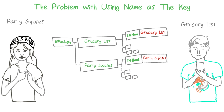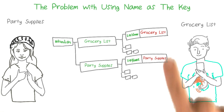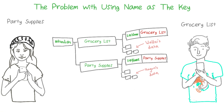Consider a scenario where we've written the code for user accounts. We'll say that both my roommates, Walter and Kugure, have their own user accounts. Walter has one list named grocery list, and Kugure has one list named party supplies, and they're represented here.